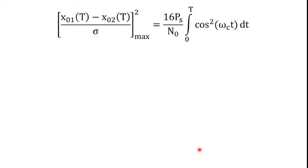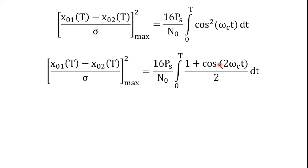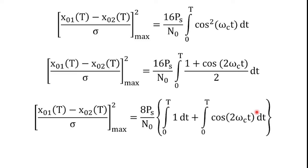Since cos²(ωct) cannot be integrated directly, we write it as cos²(ωct) = (1 + cos 2ωct) / 2. Therefore, [x01(t) − x02(t)] / σ² = (16Ps/N0) ∫_0^T (1 + cos 2ωct) / 2 · dt = (8Ps/N0) [∫_0^T 1 dt + ∫_0^T cos(2ωct) dt].